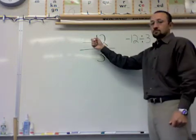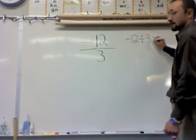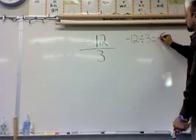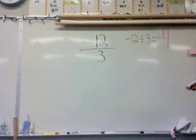My signs are different. I have a negative and a positive, which means my answer will end up being negative. 3 goes into 12 four times, and it has to be negative because the signs are different. So negative 12 divided by 3 equals negative 4.